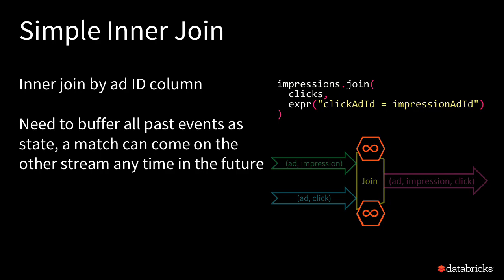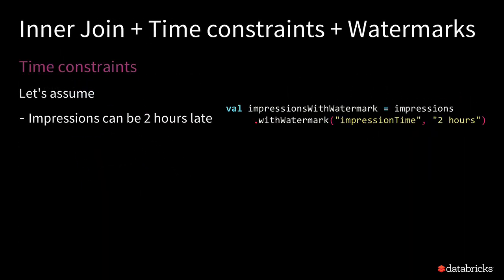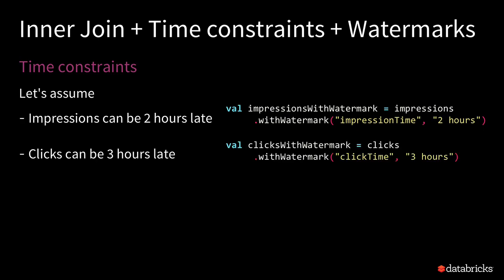In the streaming query itself, you need to provide additional time constraints on how delayed data can be between the click and the impression, which allows the engine to understand when it can throw away a click or an impression. To understand these time constraints, let's assume your impression can be at most two hours late, so we apply a watermark with a two-hour delay. And your click can be at most three hours late, so you define the clicks with a watermark of three-hour delay.